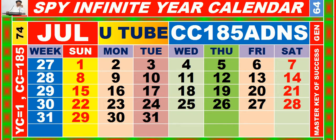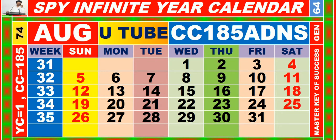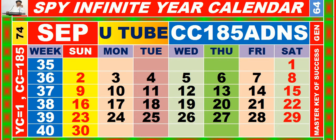Calendar for the month of July having calendar code equal to 185. Calendar for the month of August having calendar code equal to 185. Calendar for the month of September having calendar code equal to 185.